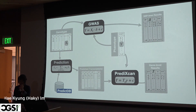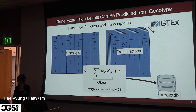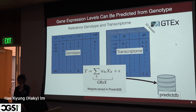About ten years ago I proposed to use genotype to predict gene expression levels. Once you have that algorithm, you take the genotype data from any GWAS, predict expression levels using these models, and then run an association between your phenotype Y and your predicted transcriptome. We have been doing this for many years using the GTEx data — our reference transcriptome dataset — where we have genotype and transcriptome data for gene expression levels across 50 different tissues.